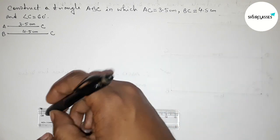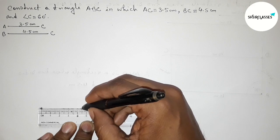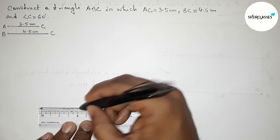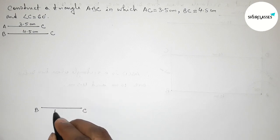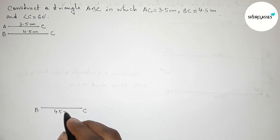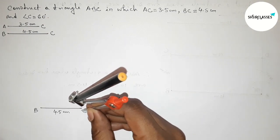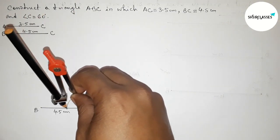Now we draw line BC equals 4.5 centimeter. Starting from 0, this is the 4.5 centimeter line segment. Taking point B at one end and point C at the other. Next, drawing a 60 degree angle at point C — putting the compass on point C, taking any length, and drawing an arc.